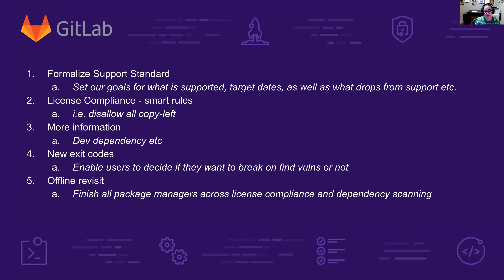More information for dependency scanning: is it a development dependency? What other information can we provide to help people when they're triaging and assessing risk? A CVSS score just tells you the risk in a default situation with certain assumptions, but by giving more information, you may be able to quickly say 'in my specific instance, this is a lower risk because it's a dev dependency and that doesn't get pushed to production.'